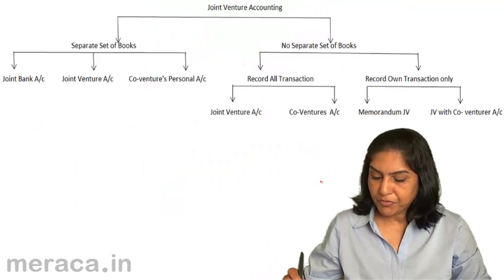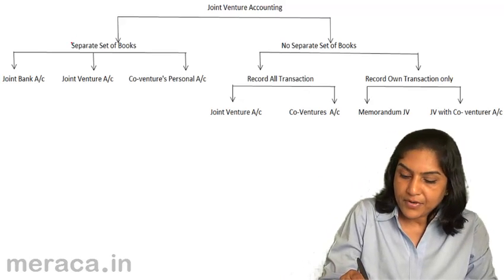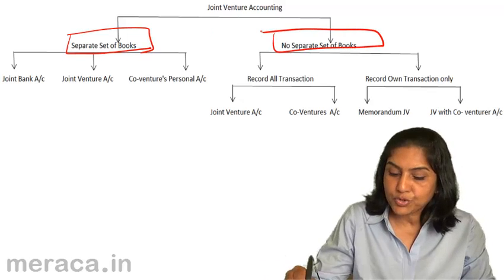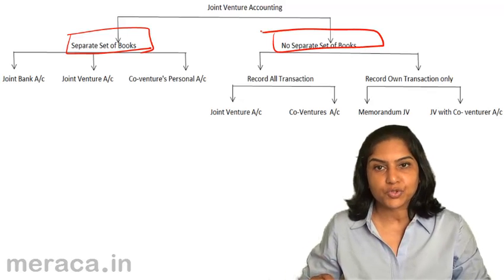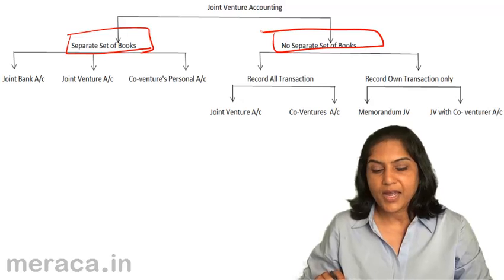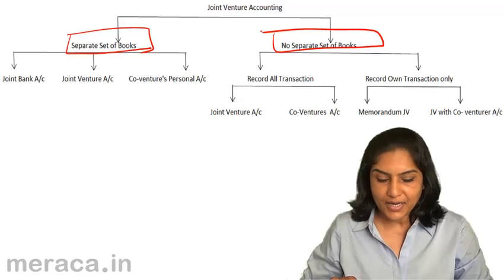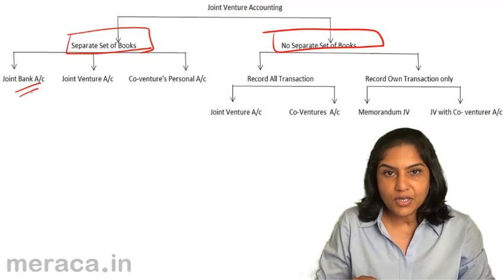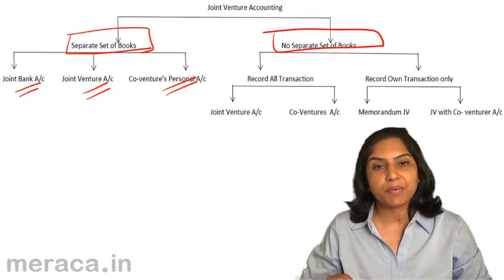Like we mentioned before, joint venture accounting could have a separate set of books or no separate set of books. What do we mean by having a separate set of books? The joint venture has a separate set of books — the books for only the joint venture. If we do that, usually we also open a separate joint bank account, and therefore the accounts involved here would be a joint bank account, a joint venture account and the co-venturer's personal account.